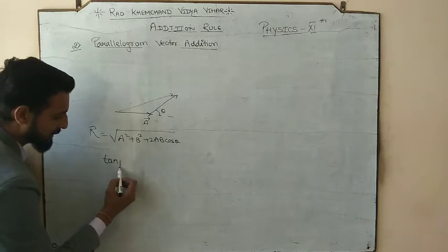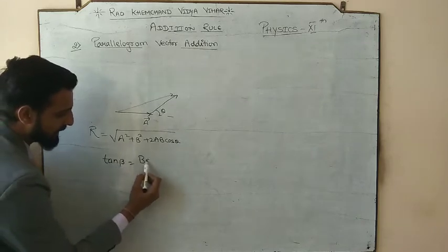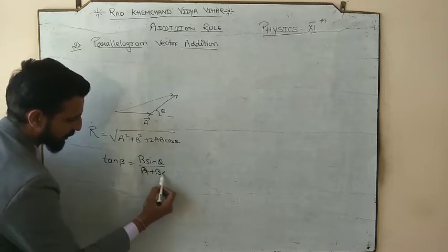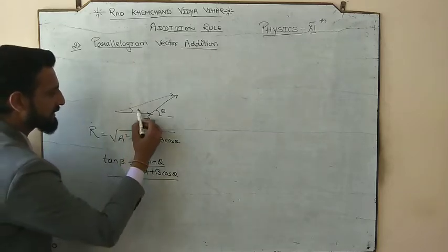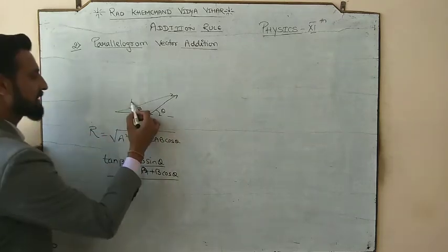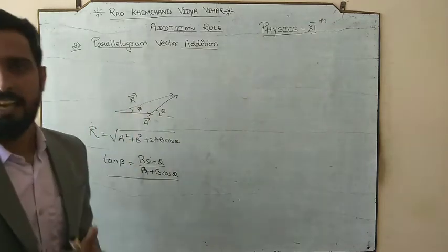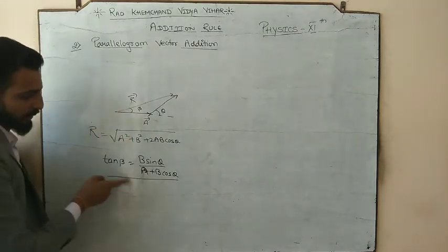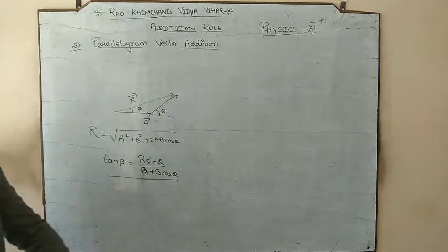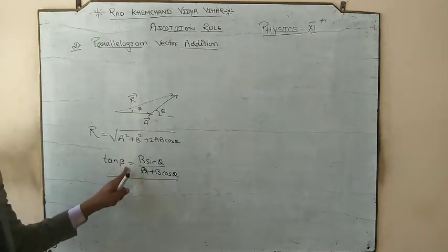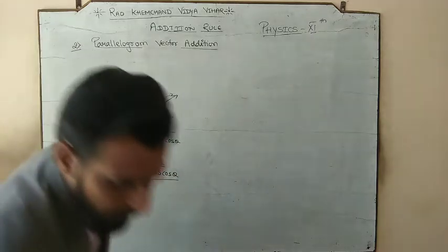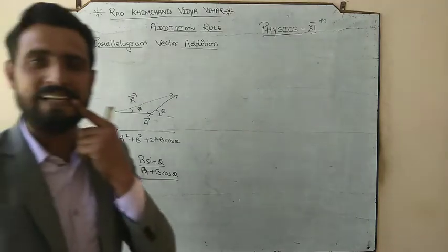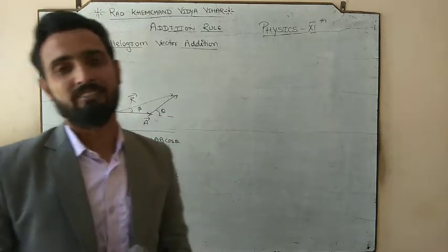The direction: if beta is the angle made by the resultant vector with the a vector, then beta is the angle between the resultant vector and a vector. So if it is with a vector, it would be b sinθ divided by (a + b cosθ), so beta would be tan inverse of that. Up to here we have done, and I have provided some assignments or numericals, and I hope you all have done that.